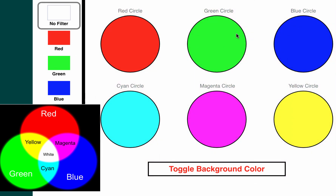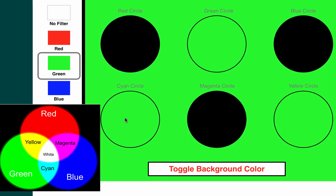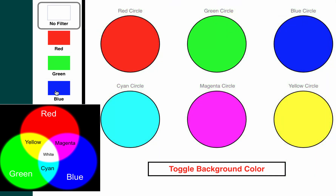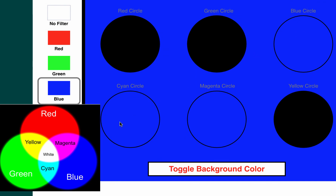If we click on green, green plus any secondary colors that have green in them should be illuminated. The green is illuminated. Cyan is a combination of green and blue, that's why that shows up. Yellow is a combination of green and red, hence why that shows up. We can do the same with blue — blue, cyan and magenta all have blue in them and that's why they're illuminated. Red, green and yellow have no blue in them, that's why they appear black.